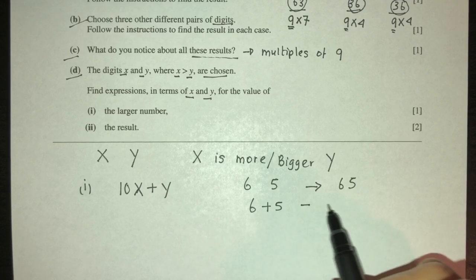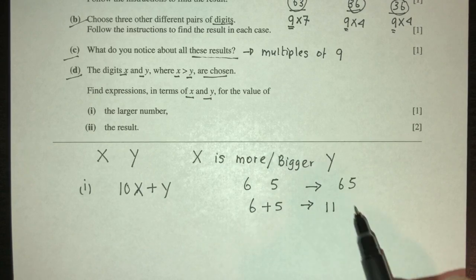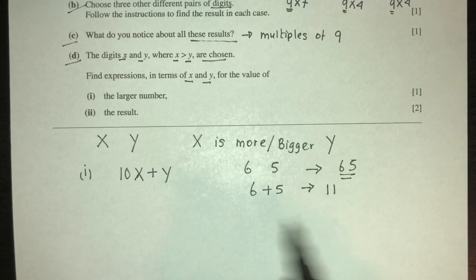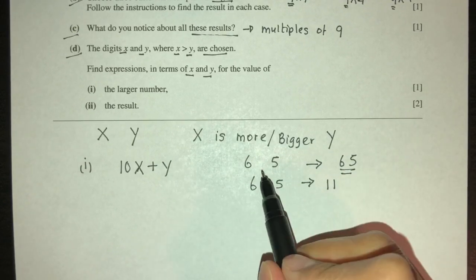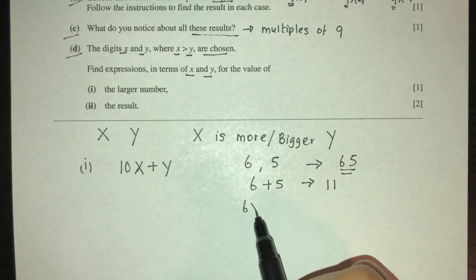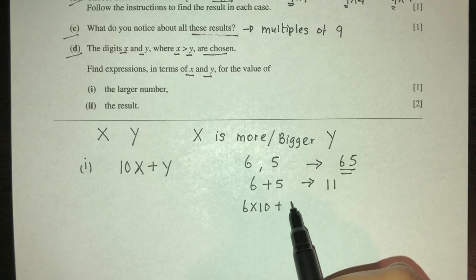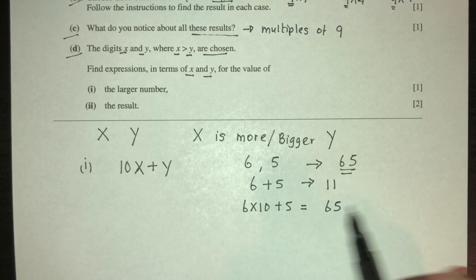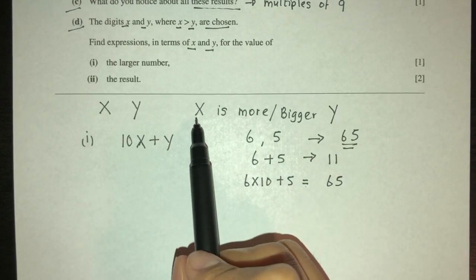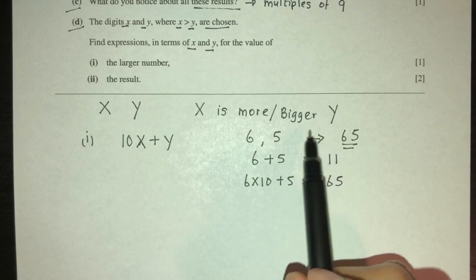So to make this become 65, you have to do 6 times 10 plus 5 to make it 65. So the same way here, we have to do x times 10 plus y to become a two-digit number. So that's the first answer.